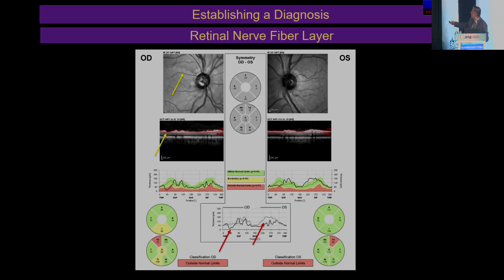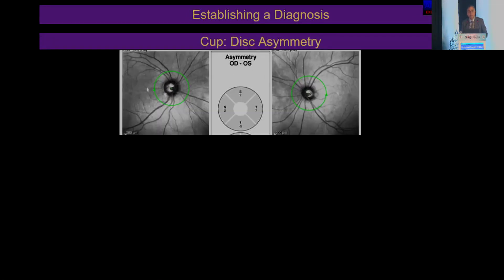We can also see the nerve fiber layer defect on the red-free image. We can see the loss of tissue here. And last, we come to the normative database. We have been used to looking at cup-to-disc asymmetry, and when we look at the cup-to-disc asymmetry, we realize there is a significant difference between these two eyes. But remember that the OCT printout is the only modality that eliminates the presence of the nose between the two eyes.